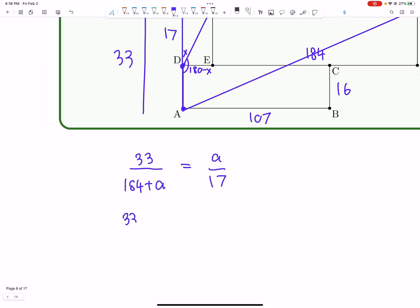And now we get 33 times 17 equals A squared plus 184A. And then 33 times 17, that is 660 minus 99, so 561.